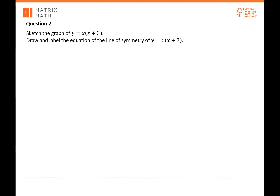Question 2: sketch the graph of Y equals X times (X plus 3), and draw and label the equation of the line of symmetry. Things you need when sketching your graph: you must have your X and Y intercepts, your turning point, and the line of symmetry if the question asks for it. It's good to include all three.